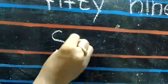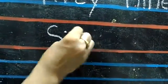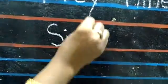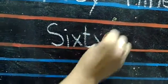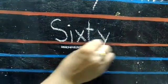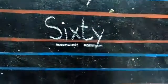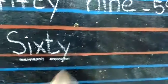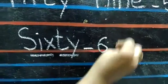Now write 60, children. 60 is spelled S-I-X-T-Y. Sixty, 60.